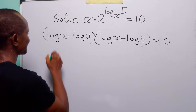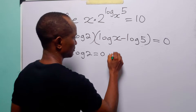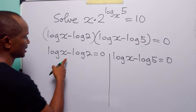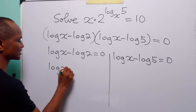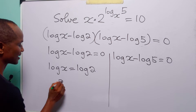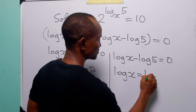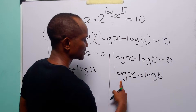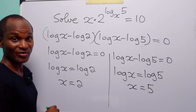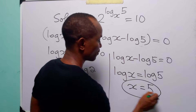From here, either log x minus log 2 equals 0, or log x minus log 5 equals 0. From the first, log x equals log 2, so comparing both sides, x equals 2. From the second, log x equals log 5, and comparing both sides, x equals 5. So the two values of x that satisfy this logarithmic equation are x equals 2 and x equals 5.